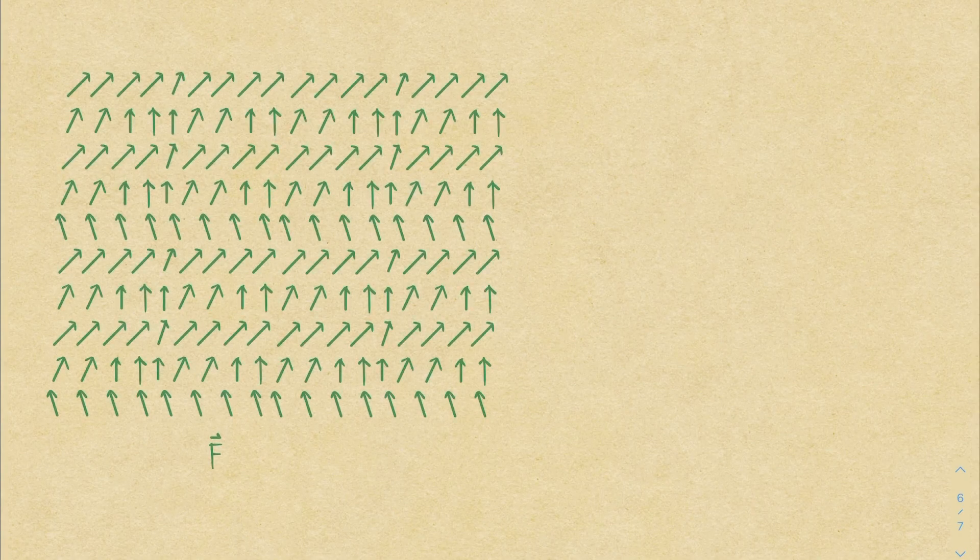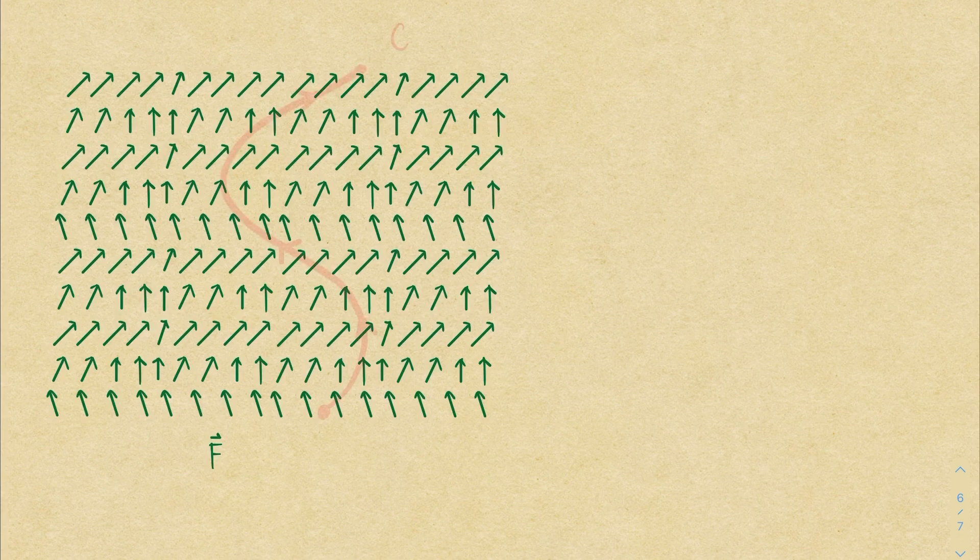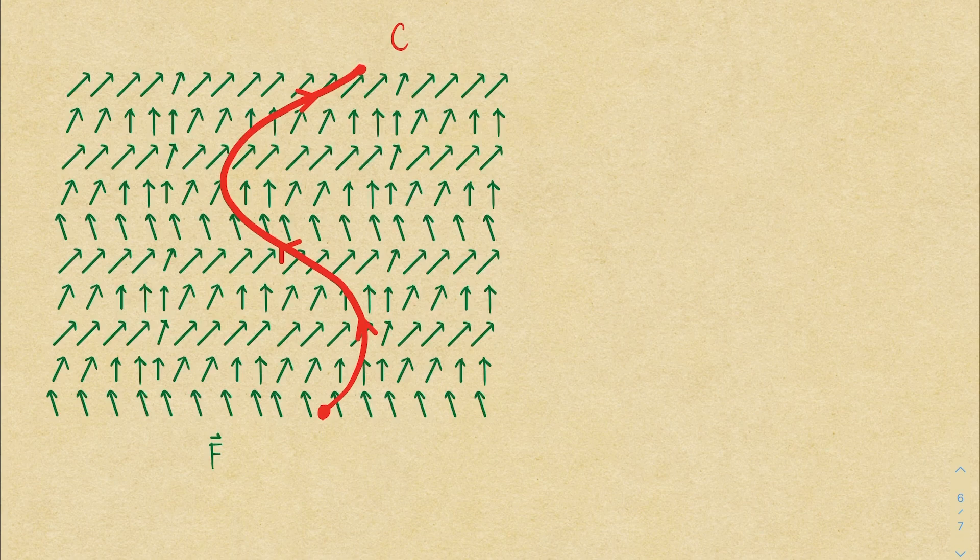Suppose we come across a wild vector field, and through it we draw an oriented curve. Previously, we've talked about the meaning of the vector line integral over this curve.